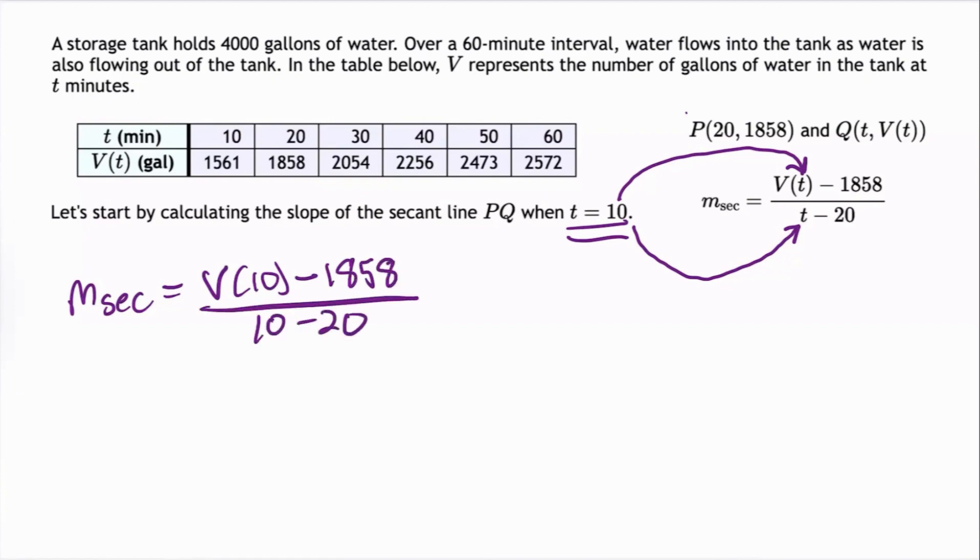To find the value of V(10), we look at the table at the input value 10 and see that the output value is 1561. So this gives us M_sec equals 1561 minus 1858 all over the denominator, and we can calculate 10 minus 20 to get negative 10.